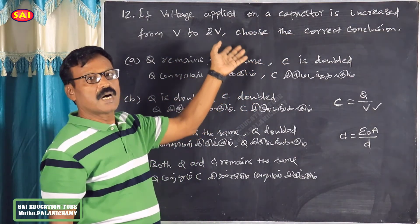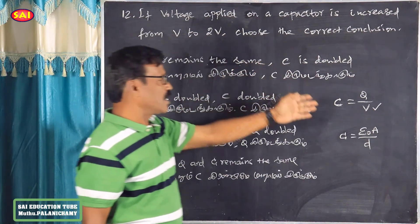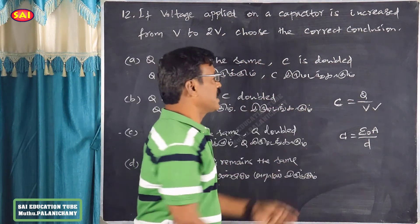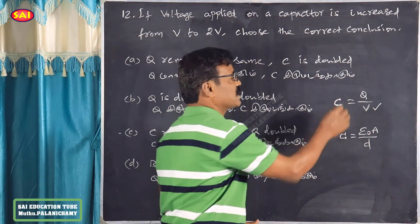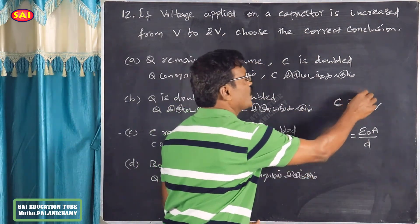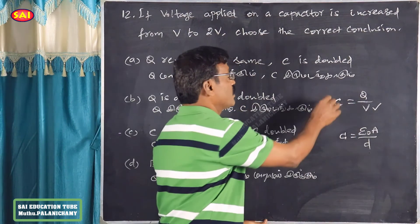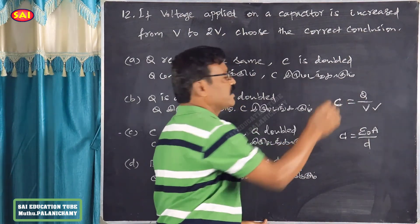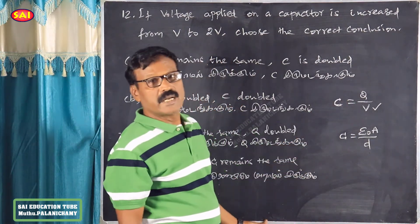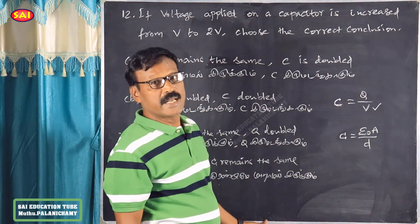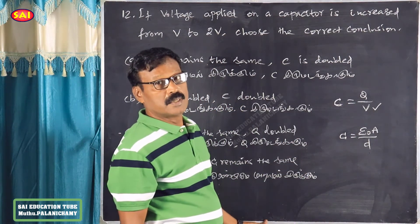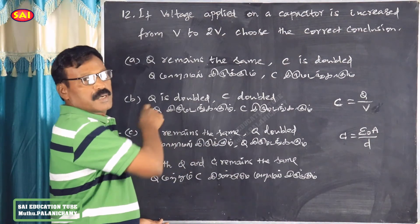Charge is doubled. So we have 2Q and 2C — now discussion.